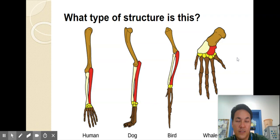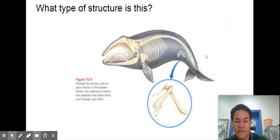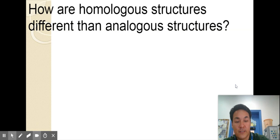All right so can you guess which type of evidence is this? Hopefully you got homologous structures. How about this one? Hopefully you got vestigial structures left over. How are homologous structures different than analogous structures can you answer that?